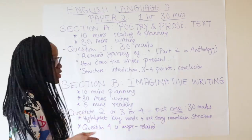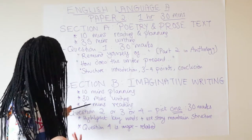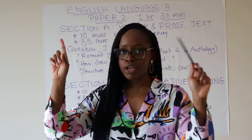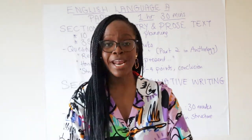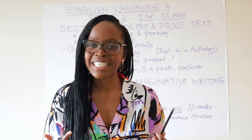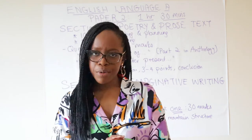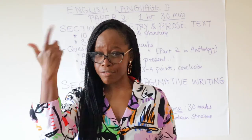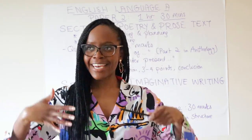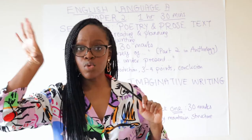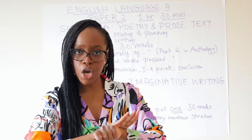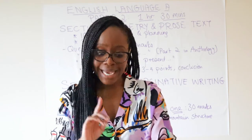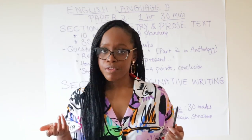Spend 10 minutes planning, 30 minutes writing, and the final 5 minutes checking over what you've written for any glaring errors. Keep an eye on the time — I always suggest getting a cheap watch, something basic like a Casio. Make sure it's not an Apple Watch or advanced smartwatch, as they won't let you into the exam with that. Clocks will be around the room, but having your own watch helps if you're short-sighted.